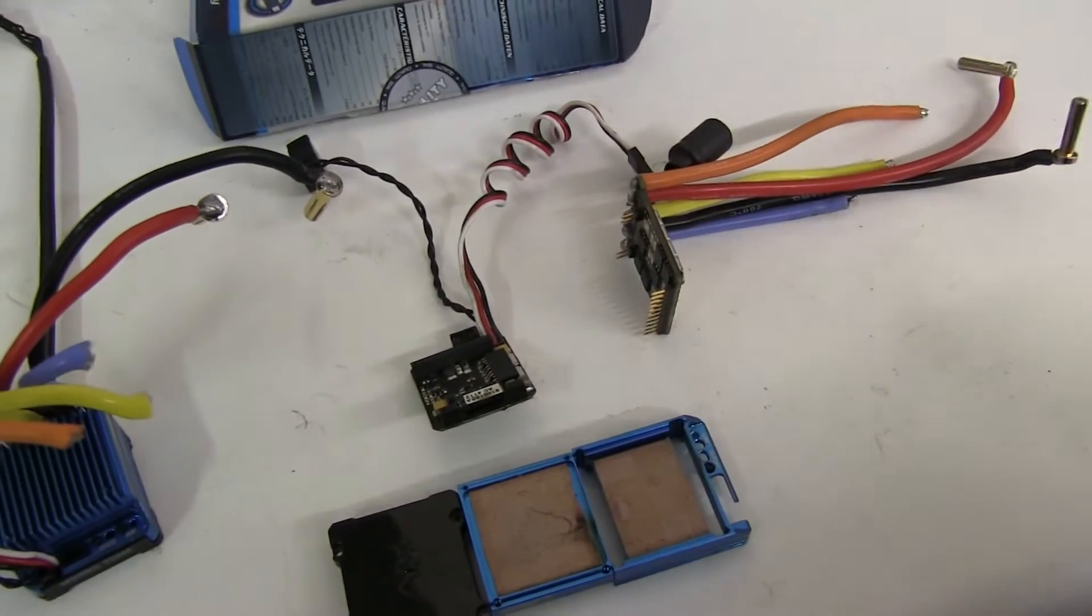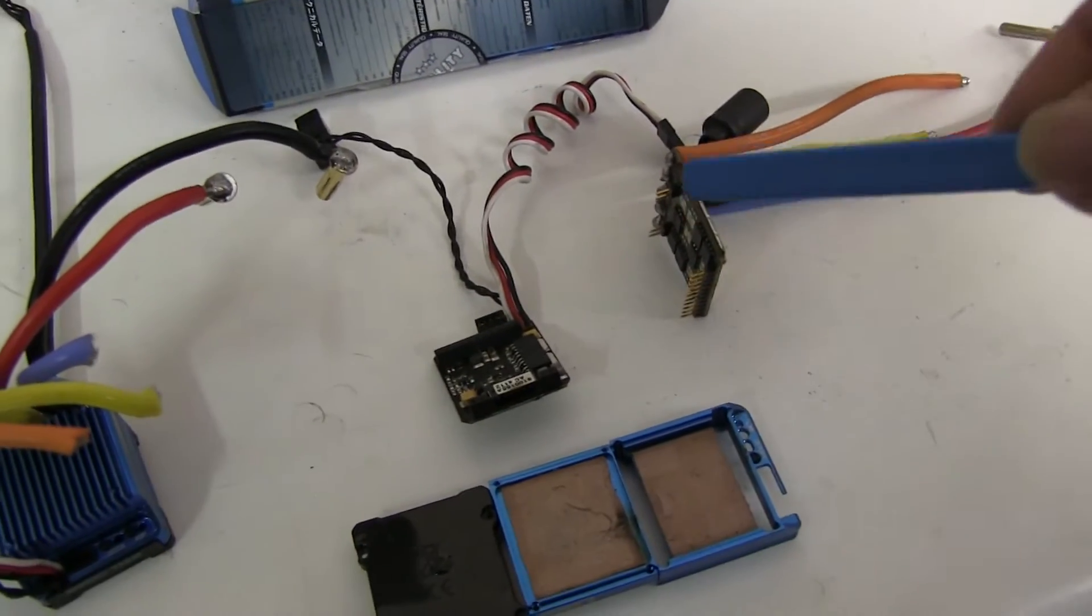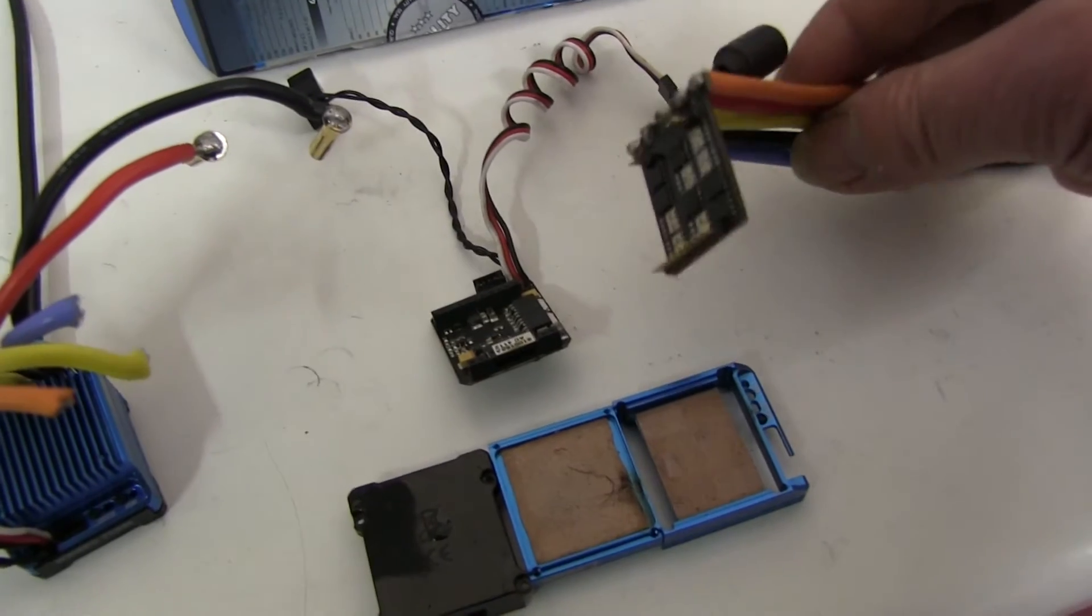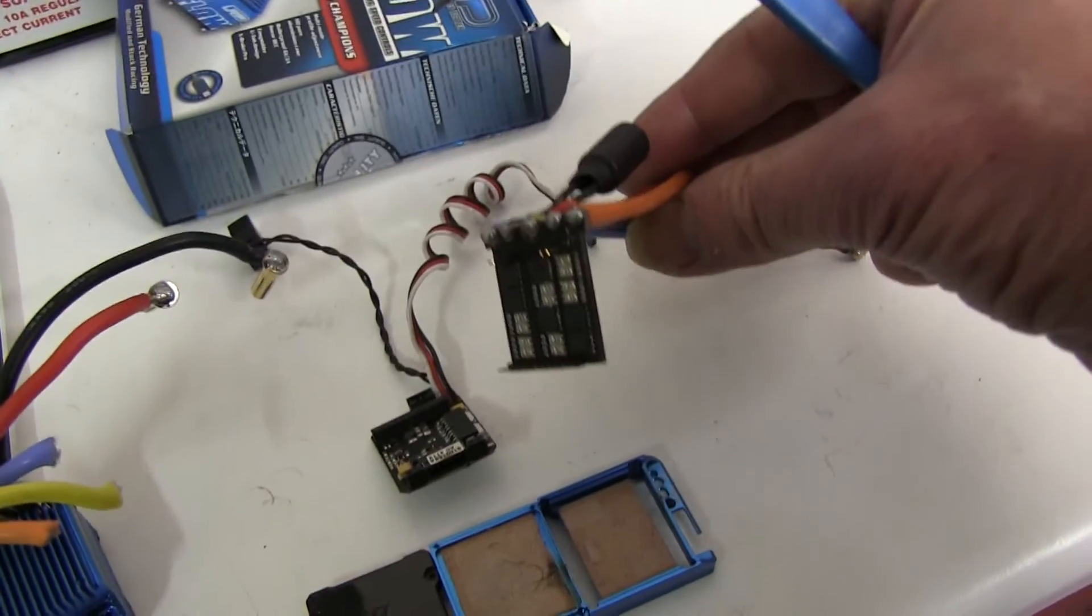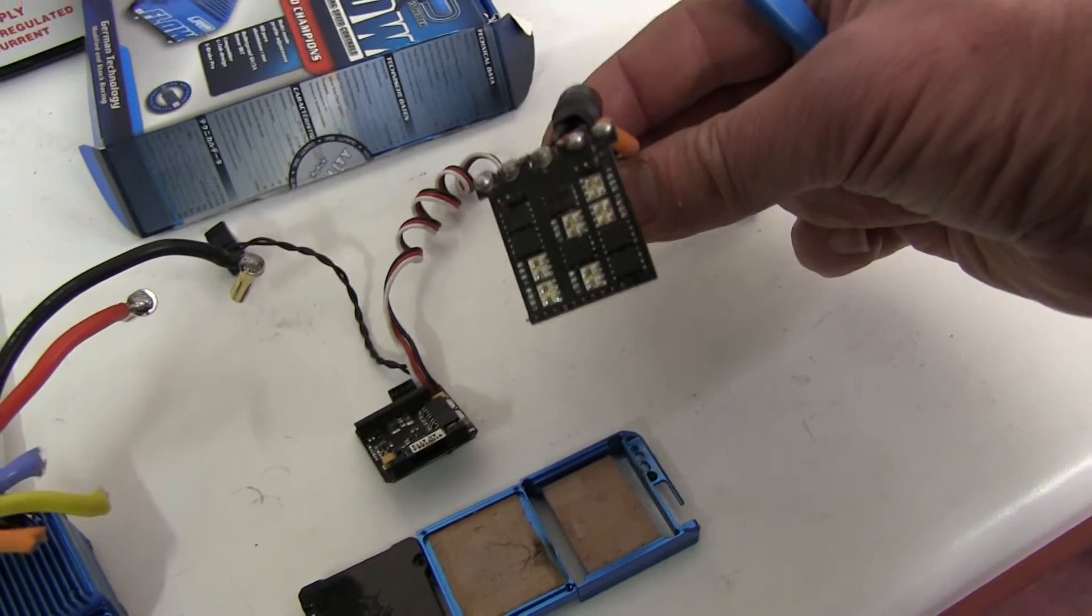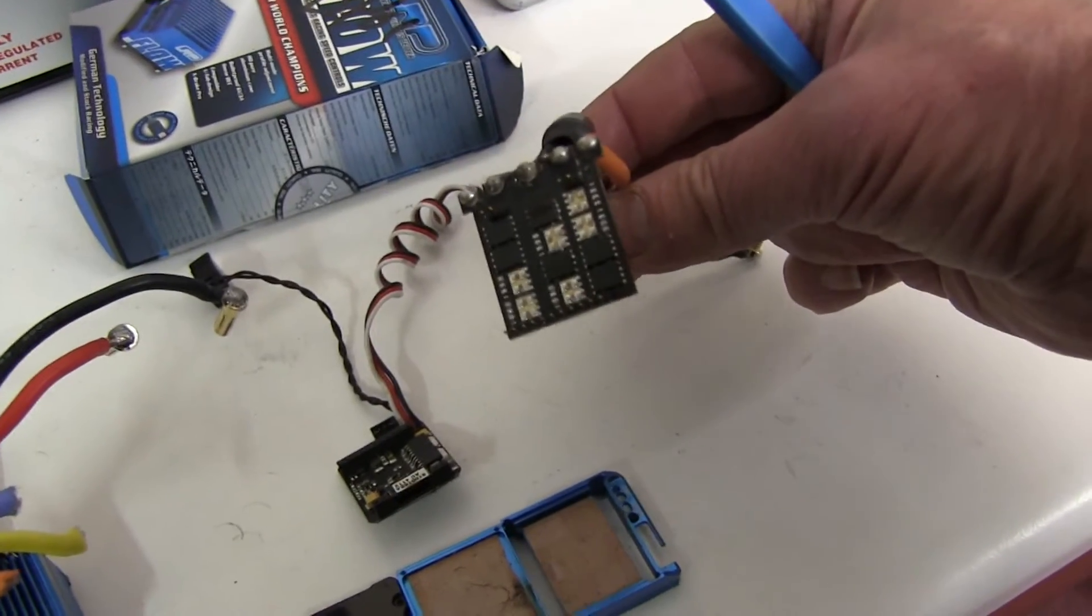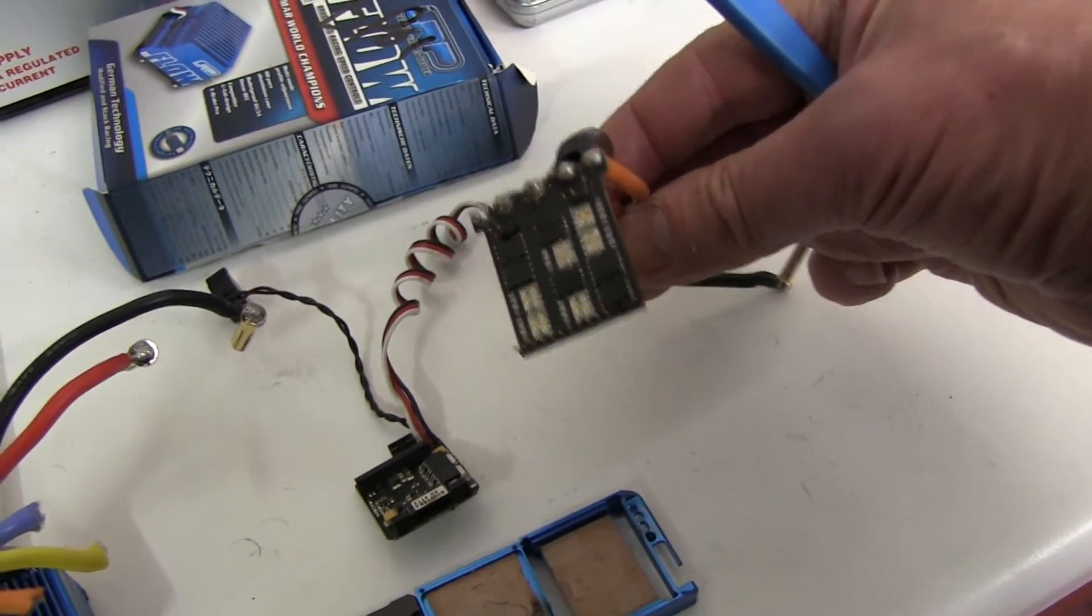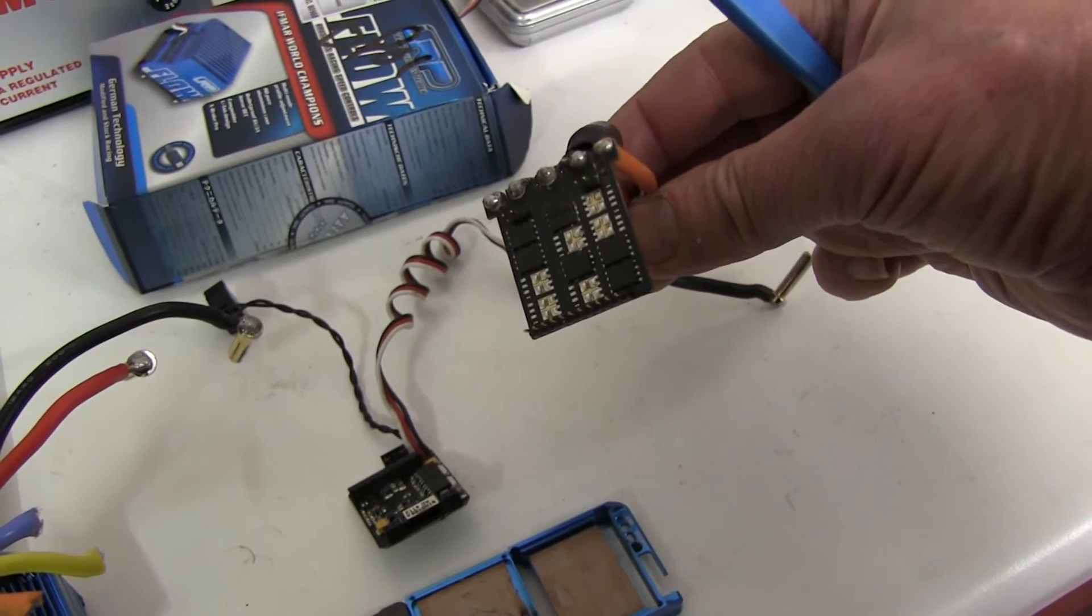If you're unlucky you blow out the FETs or some of the FETs that control the power. Here's the FET board. The black ones are the FETs, the silver parts are not FETs. This is the cheaper LRP where they don't populate the whole board.